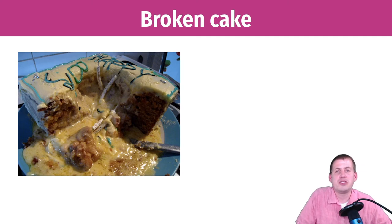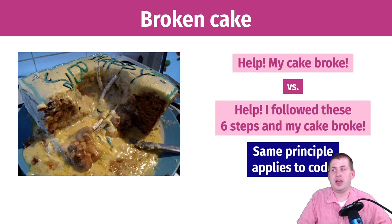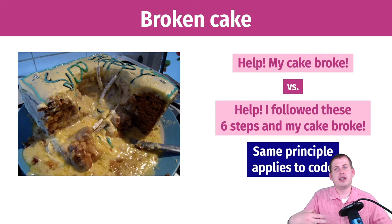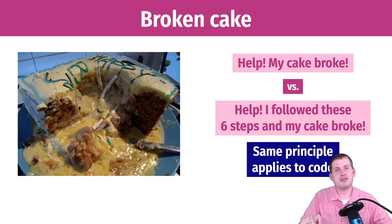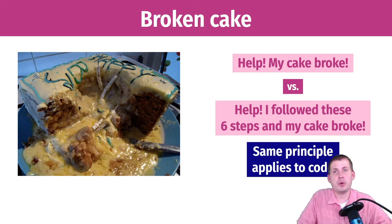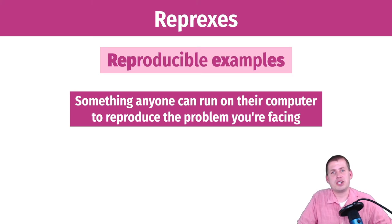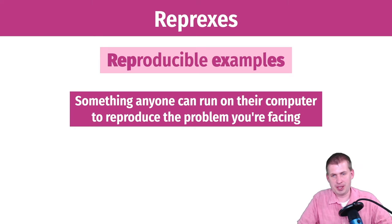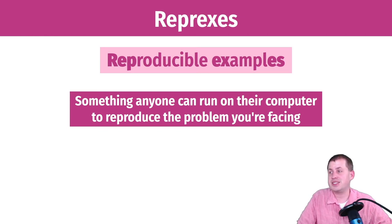Nobody's going to know what went wrong. So instead of saying 'help, my cake broke, fix it,' if you say 'I followed these six steps and then my cake broke,' the person you're asking — whether it's somebody on a random forum, me via email, or one of your classmates — can then reproduce that same sequence of steps and figure out what went wrong. The same principle applies to code. When you run into an error, one of the best ways to fix it is to create what's called a reproducible example, or reprex — the official nickname the R community uses. It's just something that somebody can run on their computer to reproduce the problem you're facing.